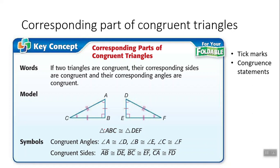Finally, CA corresponds to FD — last letter then first letter for each triangle. BC and EF have two tick marks, and CA and FD have three tick marks confirming congruence. In your homework, you'll be told that triangles are congruent and asked to write the congruence statement, then list all congruent angle pairs and all congruent side pairs — make sure you follow exactly how it was done here, keeping everything in order.